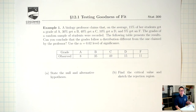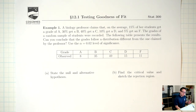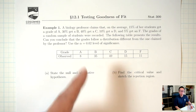So far we've seen several different types of hypothesis tests: the one proportion, the one mean, the two proportions, and the two means. Today we're going to add another type of hypothesis test into the mix, the goodness-of-fit test.